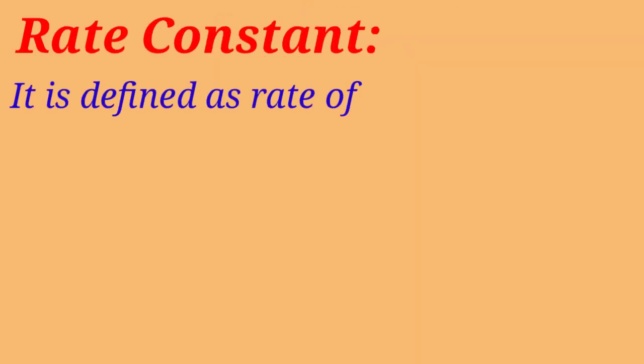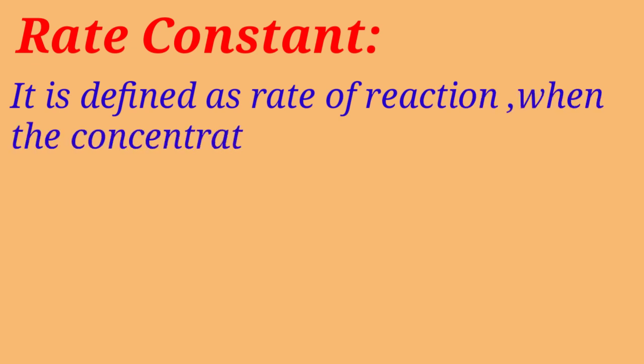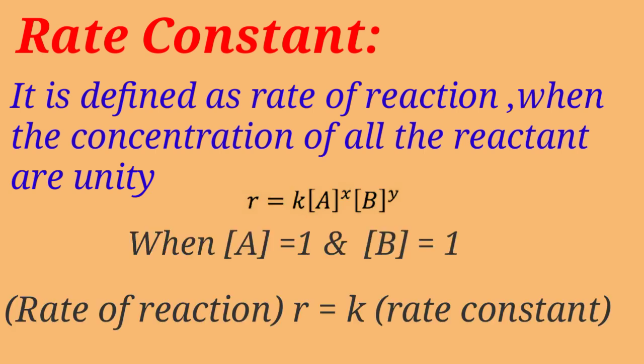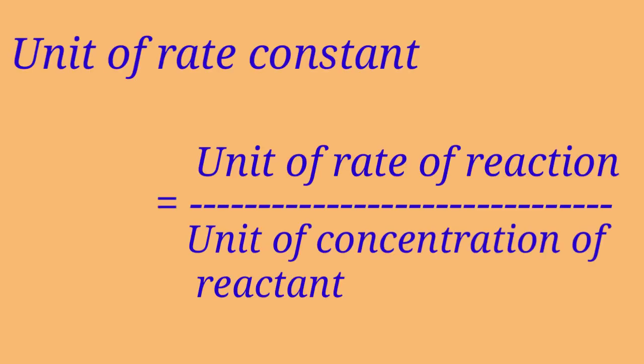Rate constant is defined as the rate of reaction when the concentration of all the reactants are unity. That is, concentration of reactants A and B is equal to 1. At that time, we can say that rate of reaction is equal to rate constant. Unit of rate constant is unit of rate of reaction upon unit of concentration of reactant.